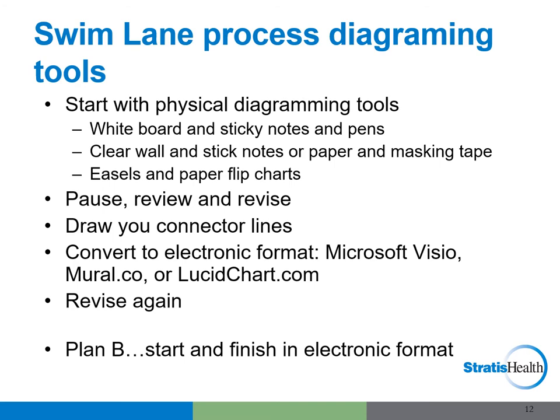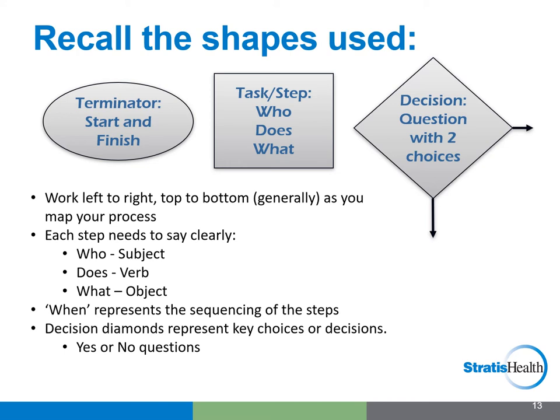Let's start creating a swimlane diagram together, but first, a refresher about the shapes we will be using. A circle or oval represents the start or finish of a process — these beginning and ending points are what frames our process or puts boundaries around it. Most of your mapping will be using squares or rectangles representing the tasks or steps, identifying who does what when. We'll also use the diamond shape to represent a question — pose these questions so that a simple yes or no will enable branching into the following steps. If you have square or rectangular sticky notes, rotate them 45 degrees to get a diamond decision shape, and draw a circle to represent the start and finishing points.